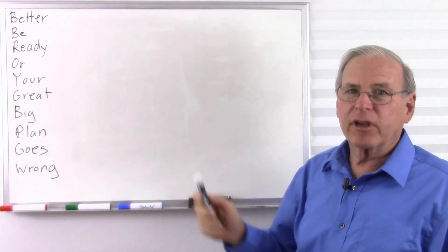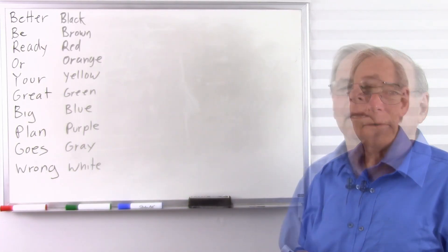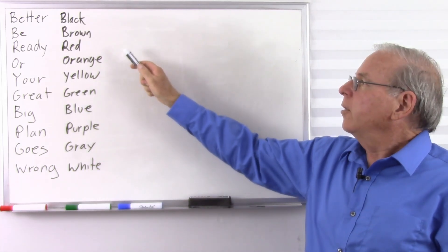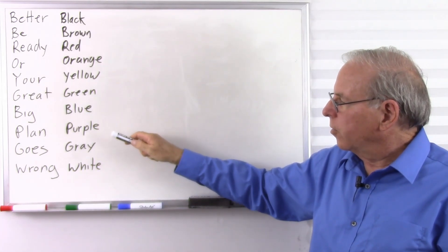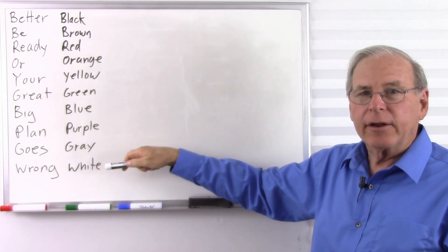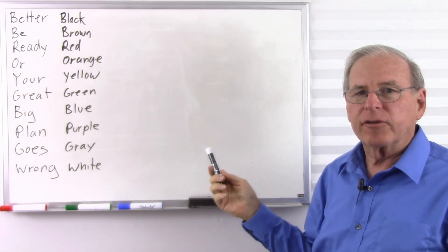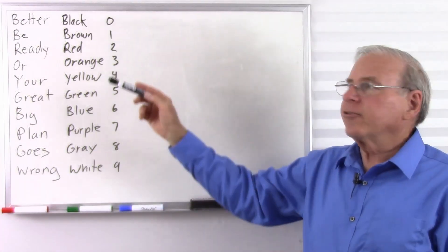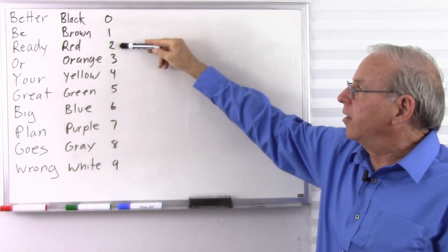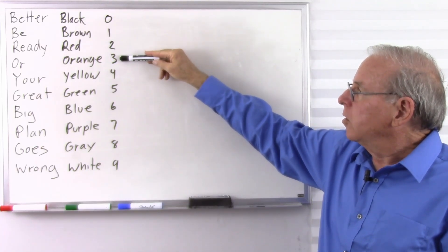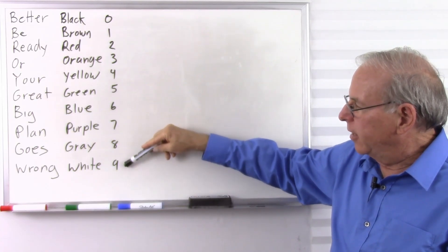Each one of these words represents a color in the color code, and those are black, brown, red, orange, yellow, green, blue, purple, gray, and white. Each one of these colors represents a number: black is zero, brown is one, red is two, three, four, five, six, seven, eight, and nine.